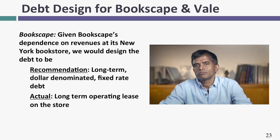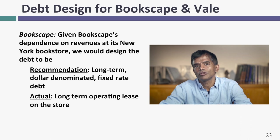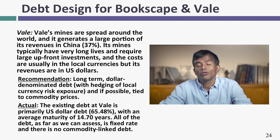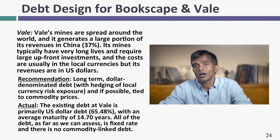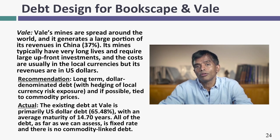Let me try this on my other companies — Vale and Bookscape first. Bookscape is a single bookstore in New York City, and the debt it has right now, which is a lease on the bookstore, strikes me as the perfect debt for Bookscape. Vale's typical investment is in a new mine. These mines have really long-term lives, and the earnings and cash flows are linked to commodity prices. If I were designing debt from scratch for Vale, I'd make it really long-term debt and tie the coupon rate to the commodity in question — so if it's an iron ore mine, I'd like to tie the coupon rate to the price of iron ore.